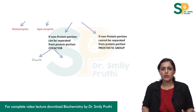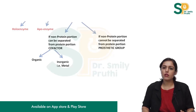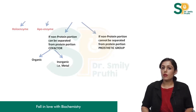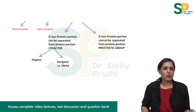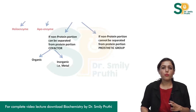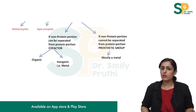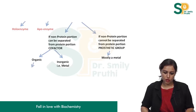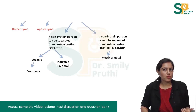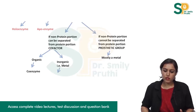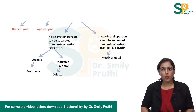Cofactor is further of two types: organic and inorganic. Cofactor can be organic or inorganic. Inorganic example is metal. Prosthetic group is most of the time inorganic, that is a metal — it is mostly a metal. If cofactor is organic, then it is known as coenzyme. The name changes to coenzyme, but if the cofactor is inorganic, then the same name cofactor is used.